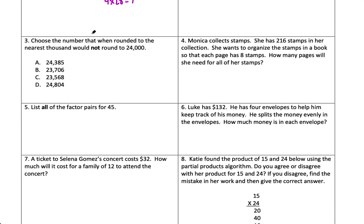Number 3: choose a number that rounded to the nearest 1,000 would NOT round to 24,000. Options A and B both round up to 24,000. Option D — look at the hundreds place — the digit 8 would make the 4 round up to 25,000, so that is your answer. When rounding to the thousands place, underline the thousands digit and circle the hundreds digit. That circled number tells you whether to round up or down. Follow your rounding rules.